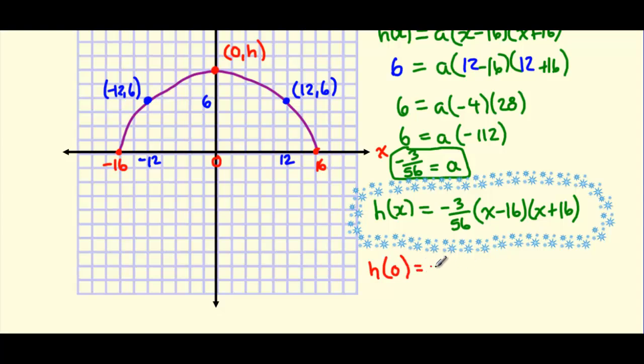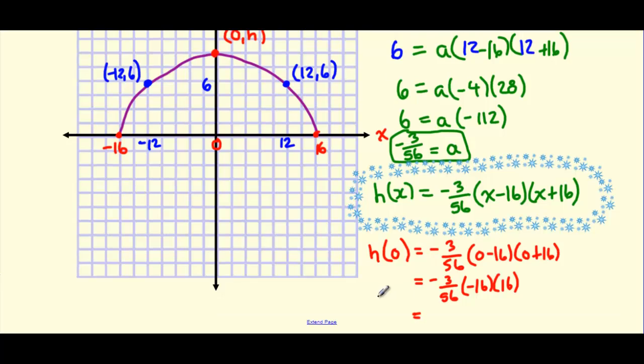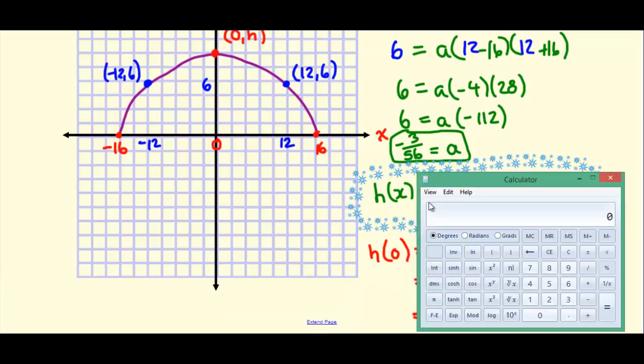We're going to plug that in. So we've got negative 3 over 56. Plug in a 0 here, so (0 minus 16)(0 plus 16). 16 times negative 3 over 56, so let's write that out here. Remembering that we can round this to the nearest tenth. So let's pull up our trusty calculator here.